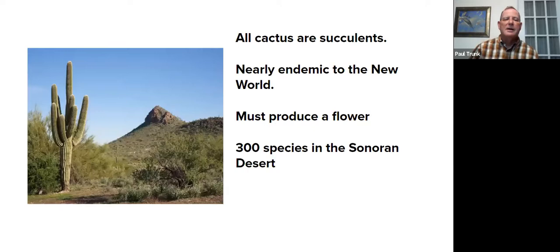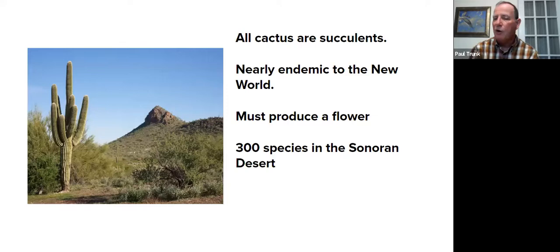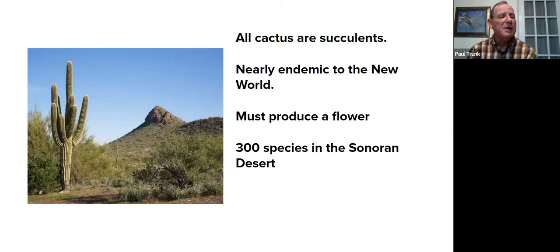We're going to spend some time talking about cactus, mainly the saguaro. All cactus are succulents, meaning they have a waxy coating. They're nearly endemic to the New World — only found in North America and some in South America. Europe and Asia don't really have cactus, although a few are native to Madagascar. Generally speaking, cactus are basically found only in the New World. All cactus must produce a flower in order to reproduce, and there are over 300 species of cactus alone in the Sonoran Desert.